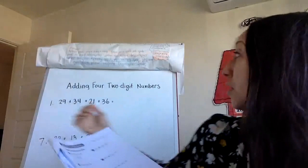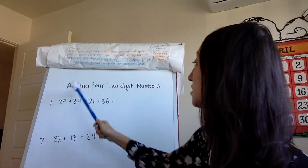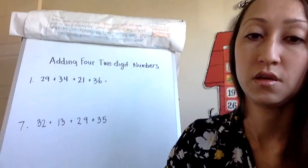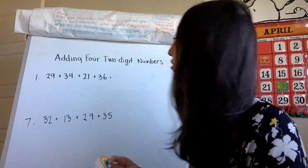Your math concept this morning is adding four two-digit numbers together. Second graders are supposed to be able to add up to four two-digit numbers together. The first one here says 29 + 34 + 21 + 36.